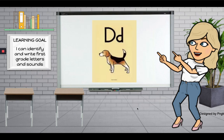Let's review our first letter. Do you know what this letter is? You got it — D. The keyword is dog and the sound is d. I'm going to say the letter, the keyword, and the sound and you echo me. D, dog, d. Good job! Let's try it again. D, dog, d. Awesome!